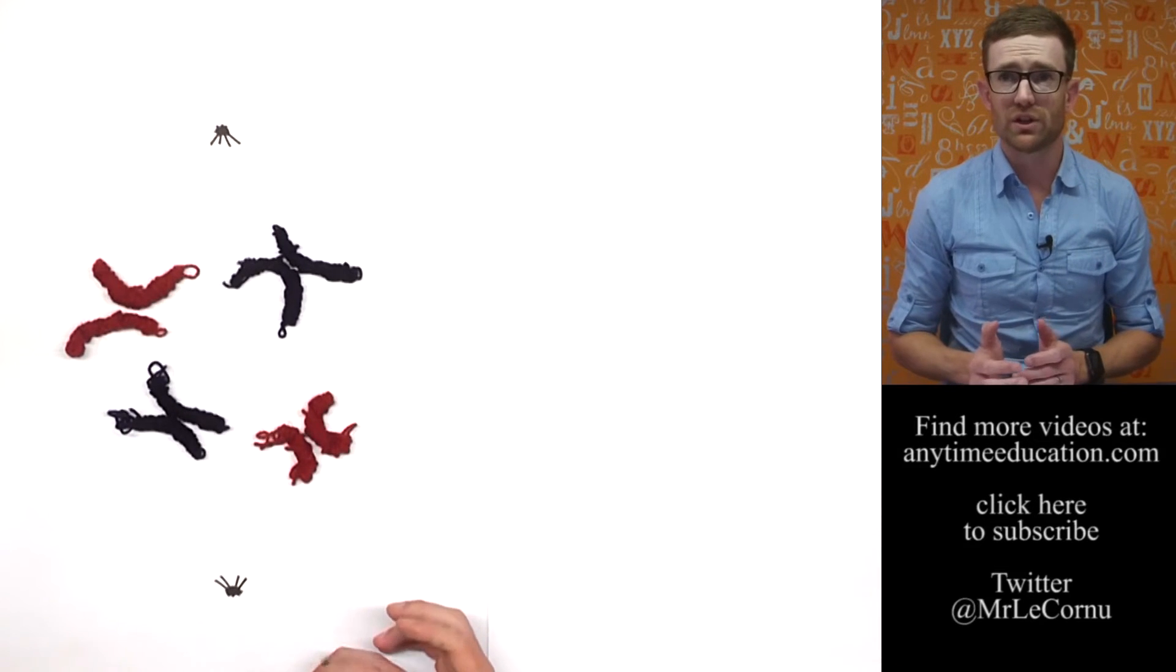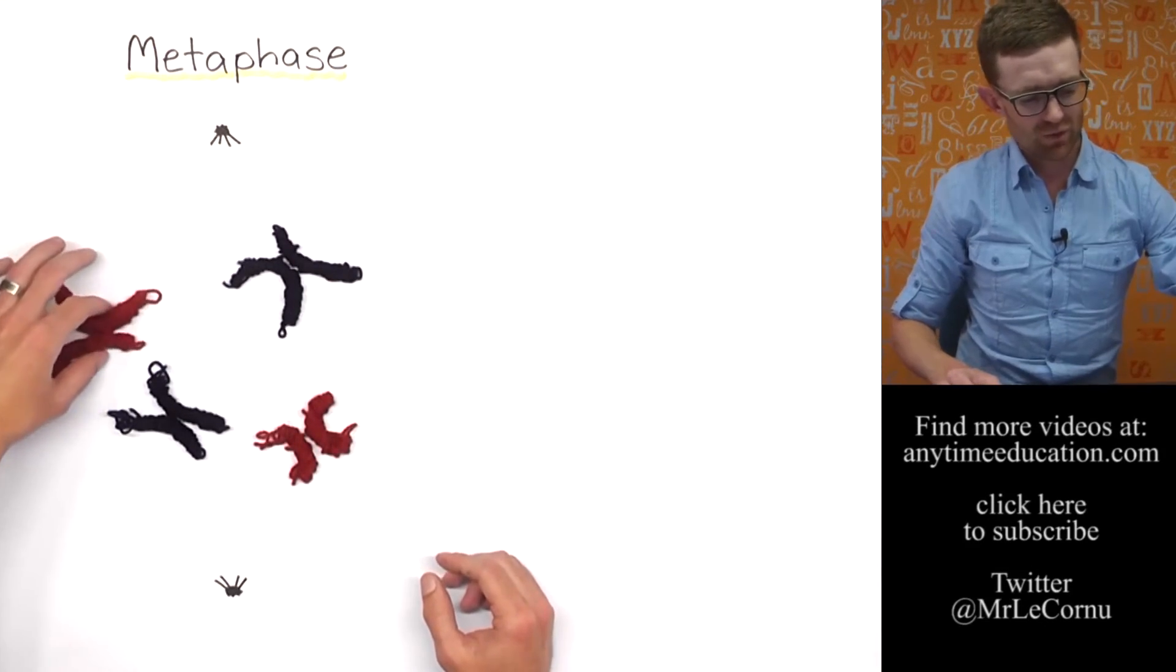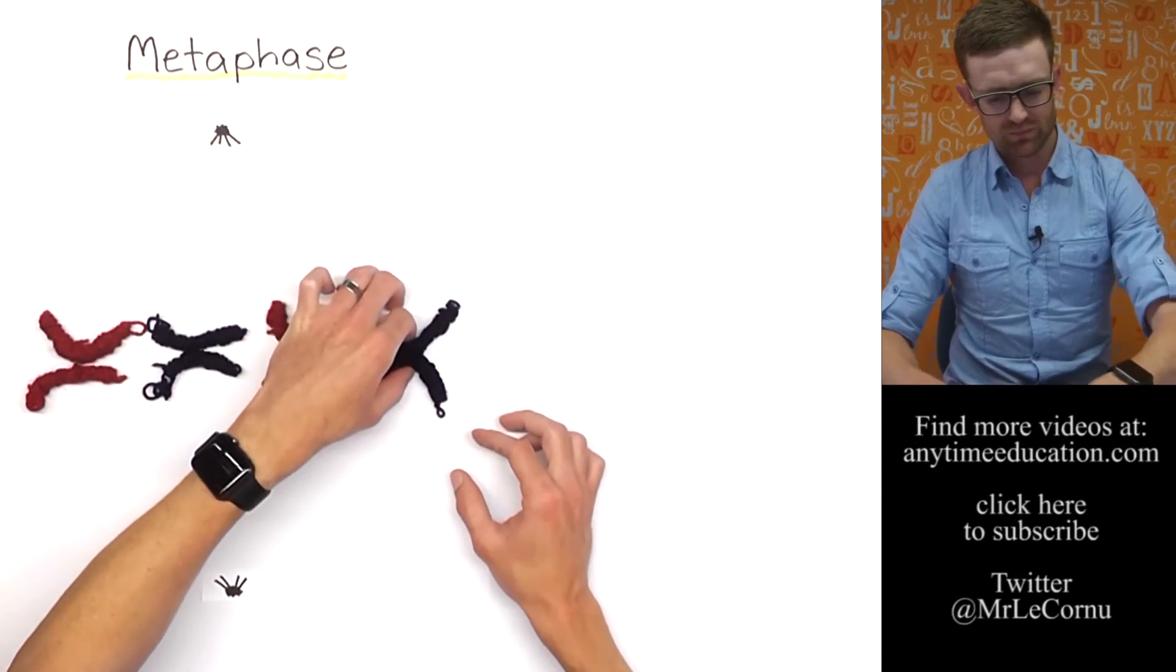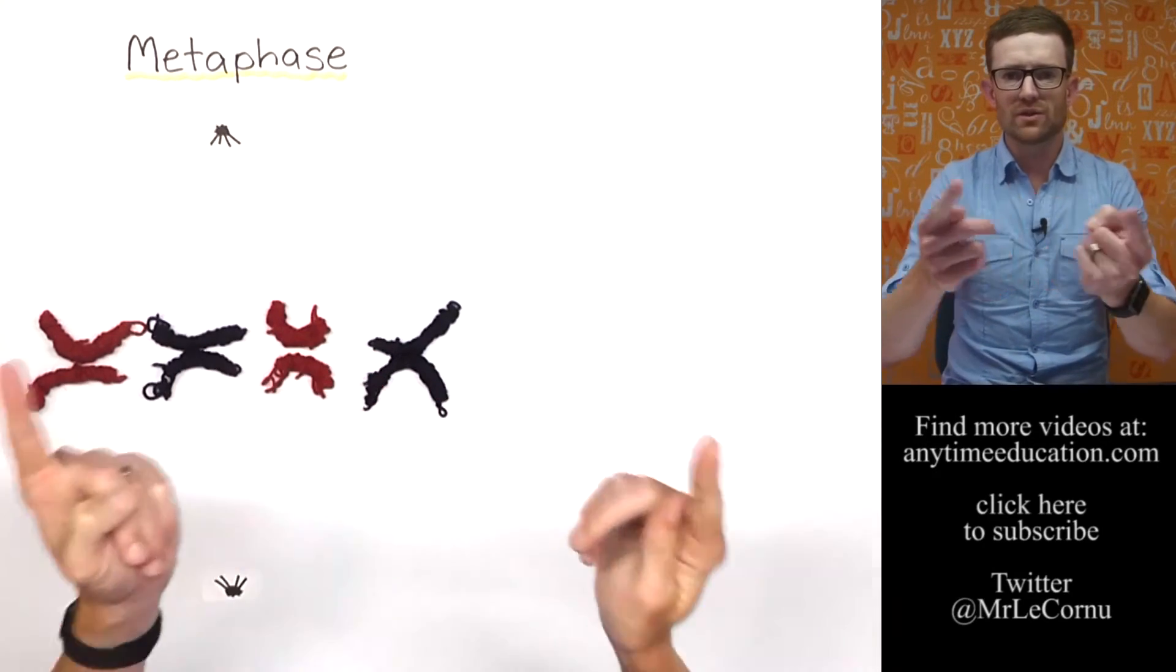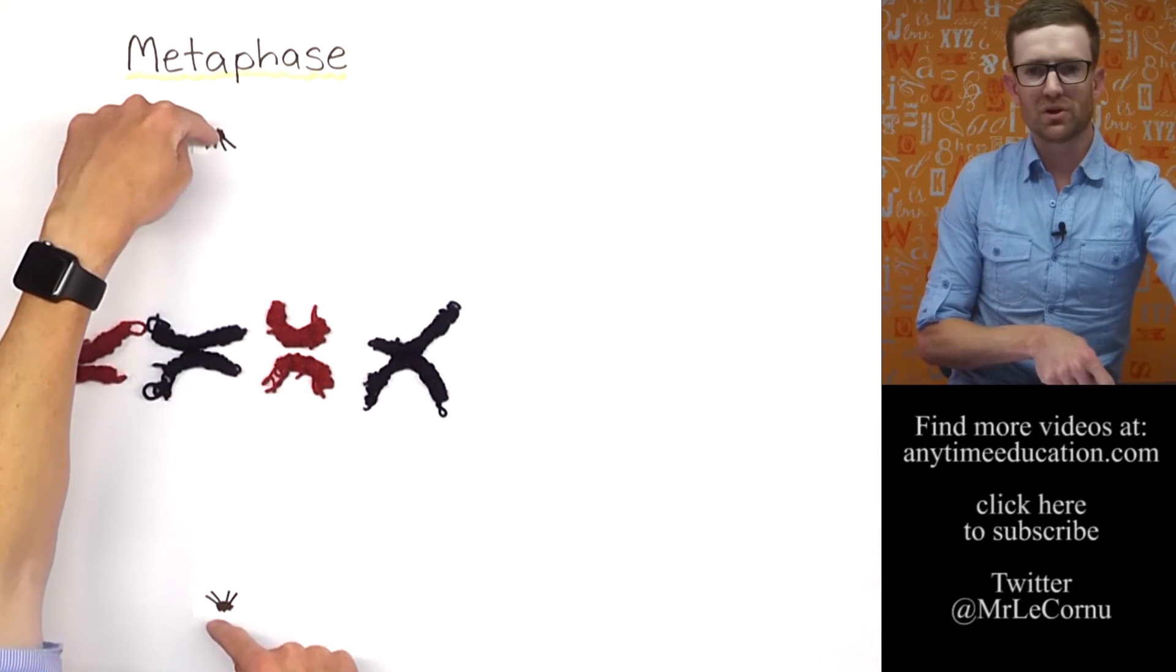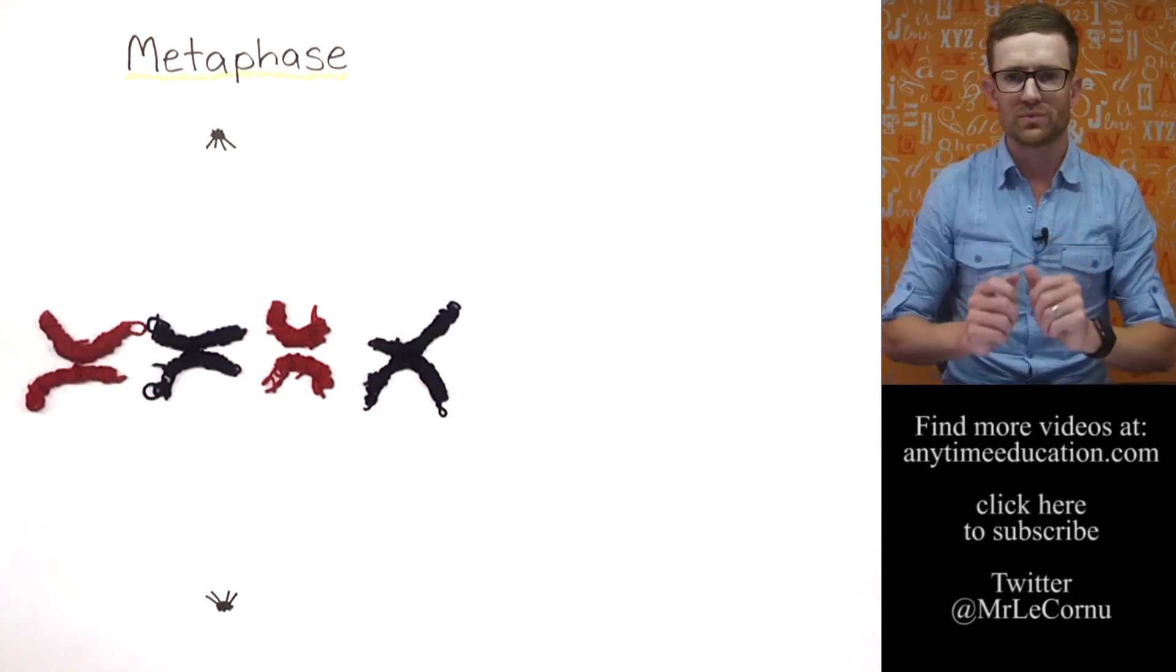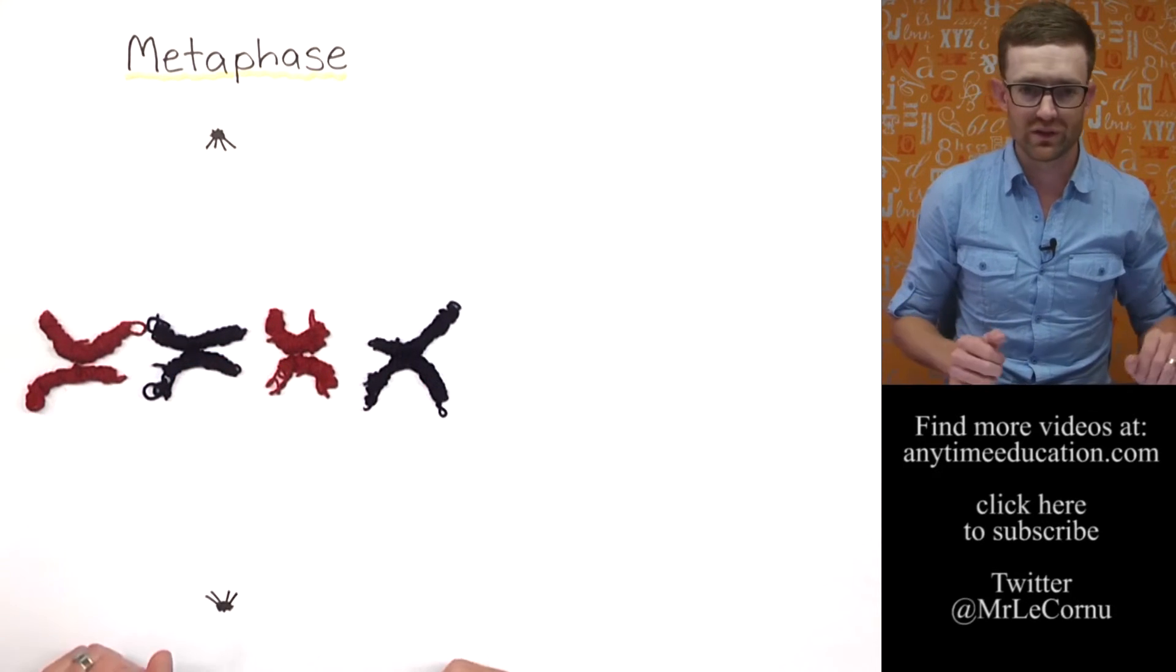The second phase of mitosis is called metaphase. In metaphase, what happens is the chromosomes line up along an imaginary line across the middle of the cell. We call that imaginary line the equator, just like the equator of the Earth. And therefore, where the spindle fibers begin, at the top and bottom here, we can refer to those as the poles. So we've got opposite poles and an equator, which is this imaginary line running around the middle of the cell. The other term used to refer to the equator is the metaphase plate. Either of those is fine.